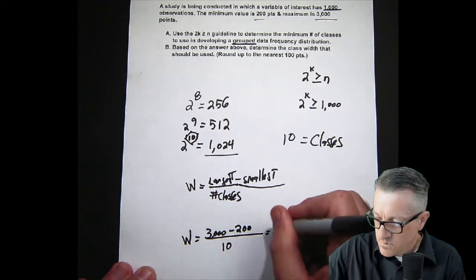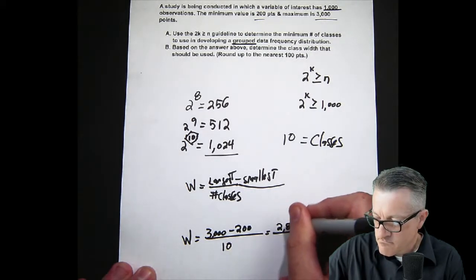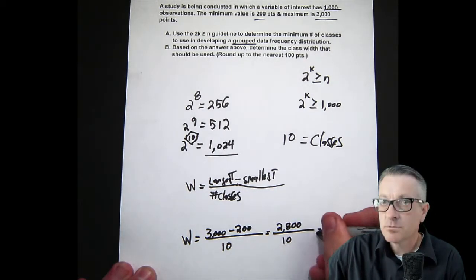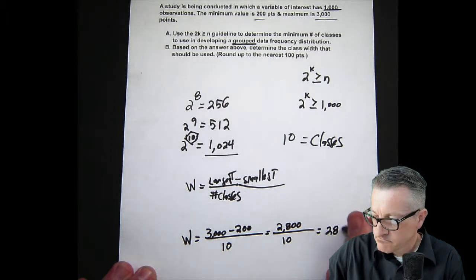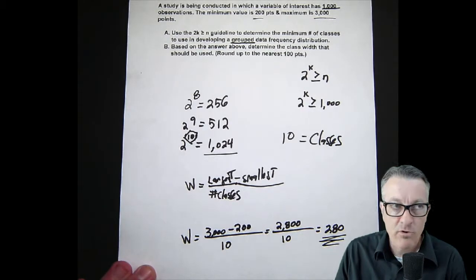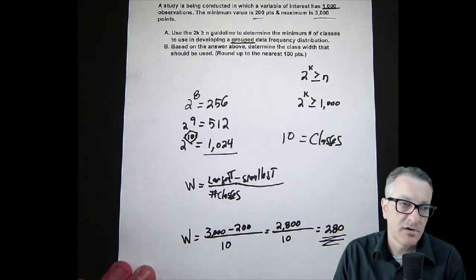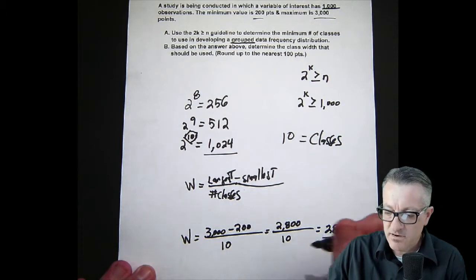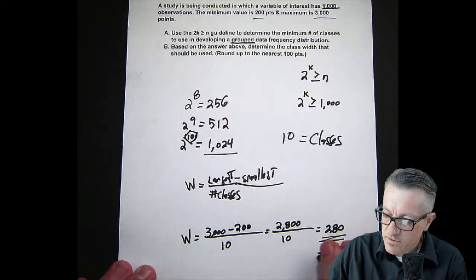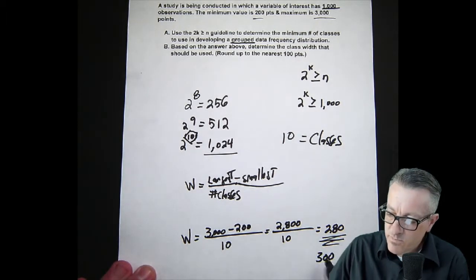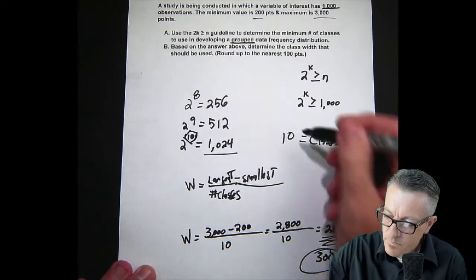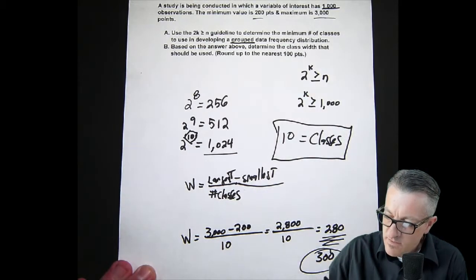2800 divided by 10 equals about 280. Now if we round up we could leave it at 280, but if we round up to make it kind of nice rounded hundreds numbers, groups by the hundreds, it would be 300. So we would end up having 10 groups or 10 classes that have a range of 300, and that's the class width.